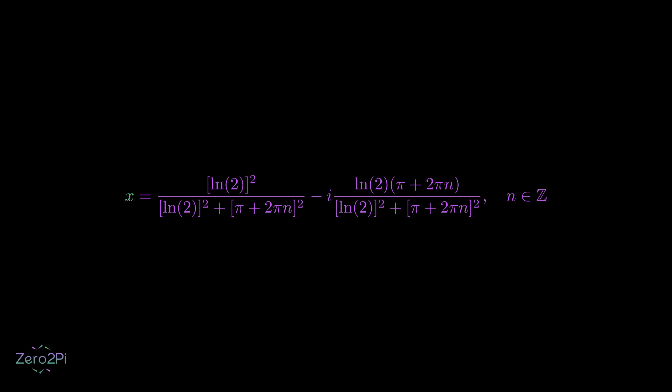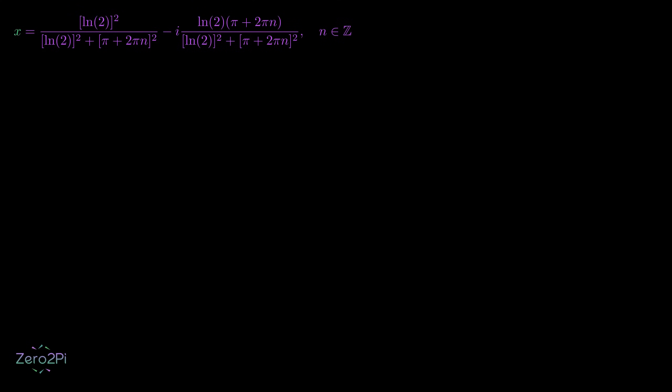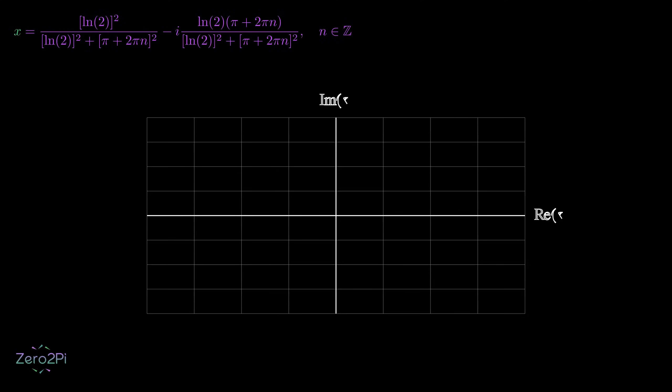Now understand this. To plot a complex function with both inputs and outputs, we would need a four-dimensional system, which is not easy to visualize. So instead, we plot the input in the two-dimensional complex plane and visualize the output in a different plane.